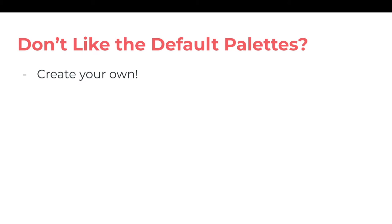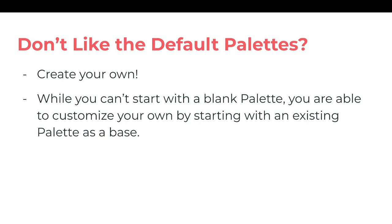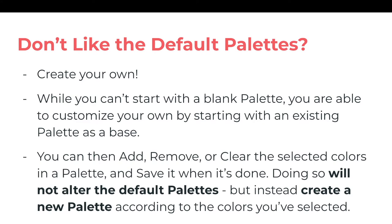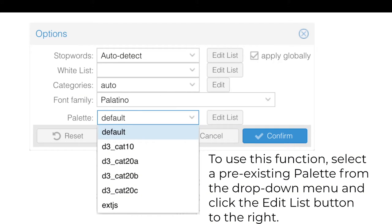Don't like the default palettes? Create your own! While you can't start with a blank palette, you are able to customize your own by starting with an existing palette as a base. You can then add, remove, or clear the selected colors in a palette, and save it when it's done. Doing so will not alter the default palettes, but instead create a new palette according to the colors you've selected. To use this function, select a pre-existing palette from the drop-down menu and click the Edit List button to the right.